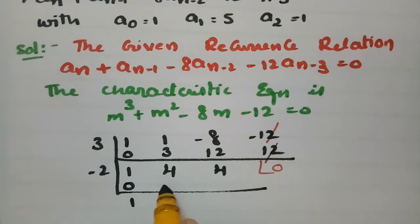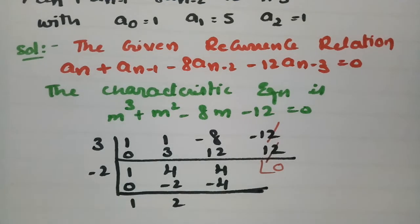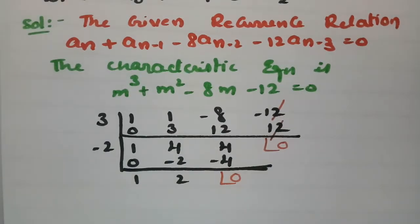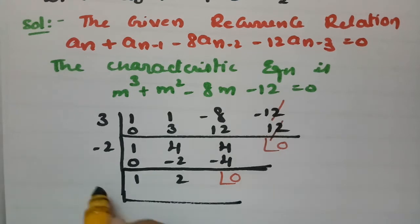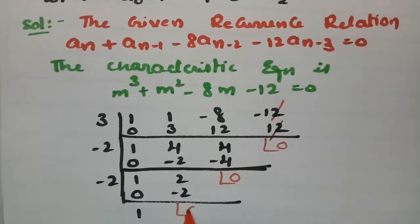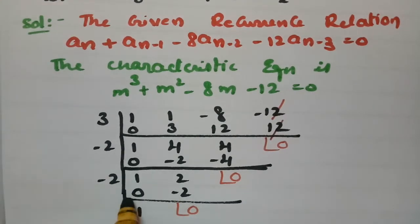Checking with 3: starting with 1, we get 4 and 12, so this becomes 0. Now checking with minus 2: starting with 1, we get minus 2, plus 2, minus 4, and this becomes 0. What remains I check again with minus 2, and we get 0 again.